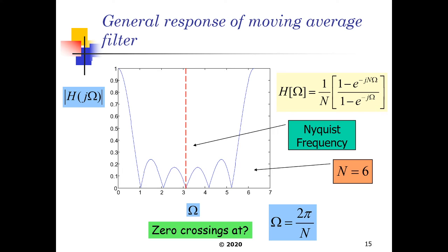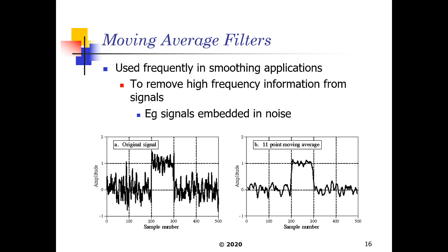Now, even though the moving average filter is generally a sort of low-quality low-pass filter, it actually is very useful for first-pass responses. So as such, they are used quite frequently in smoothing applications to remove high-frequency information from the signal.